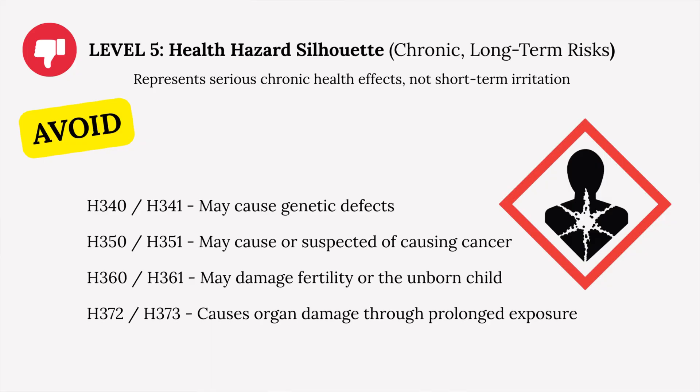Level five is the health hazard silhouette pictogram. If your fragrance oil contains this pictogram, it likely contains hazard codes such as H340 or H341 (may cause genetic defects), H350 or H351 (may cause or be suspected of causing cancer), H361 (may damage fertility or the unborn child), and H372 or H373 (causes organ damage through prolonged exposure). This represents serious long-term chronic health effects — not just short-term irritation. We're talking organ toxicity, reproductive toxicity, and possible carcinogens — things we don't want in our fragrance oils.